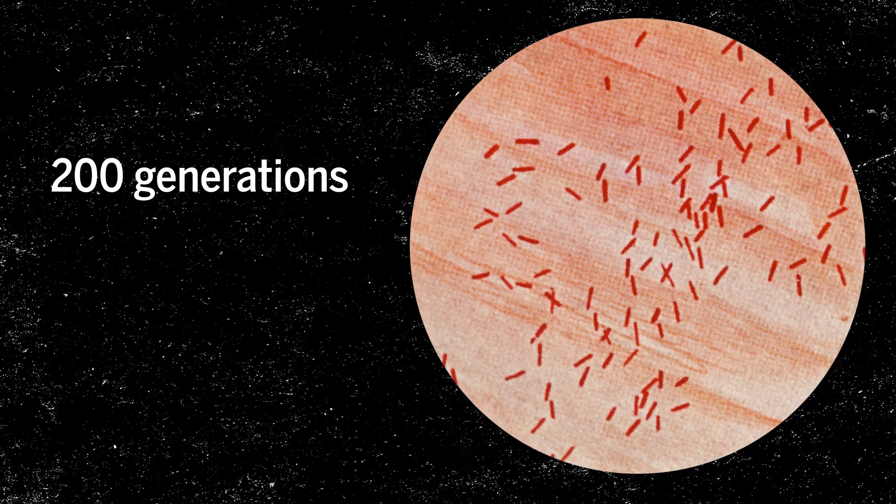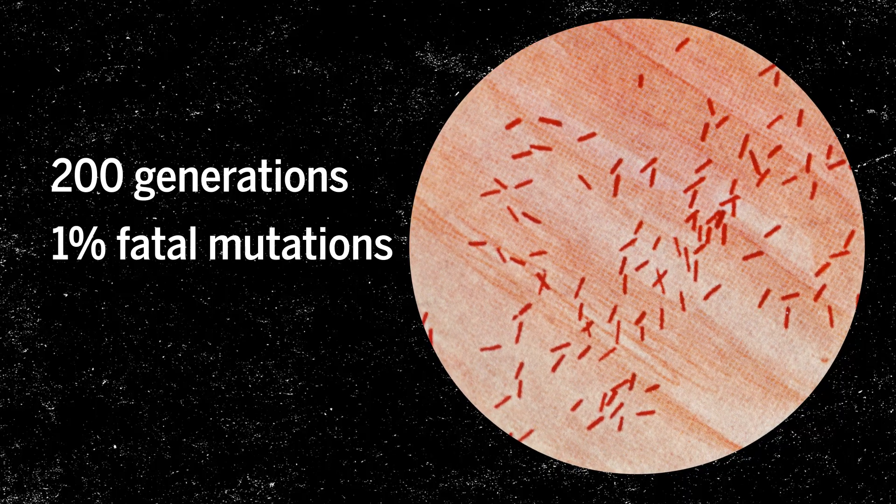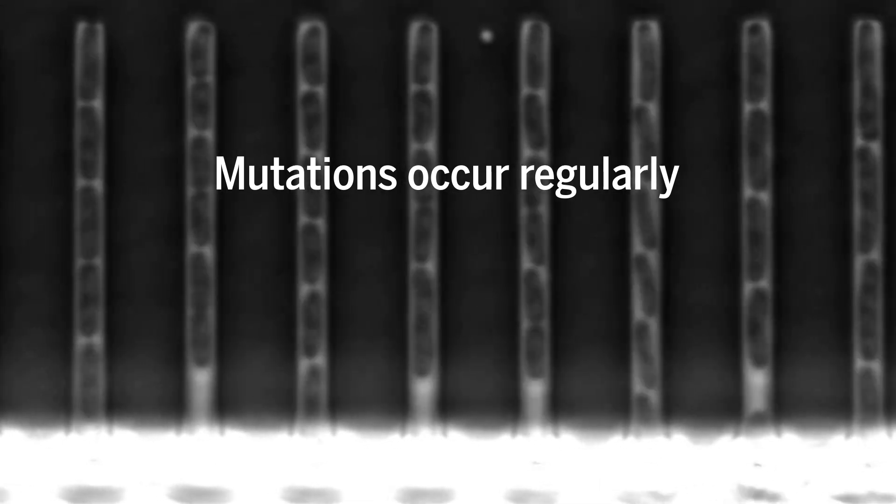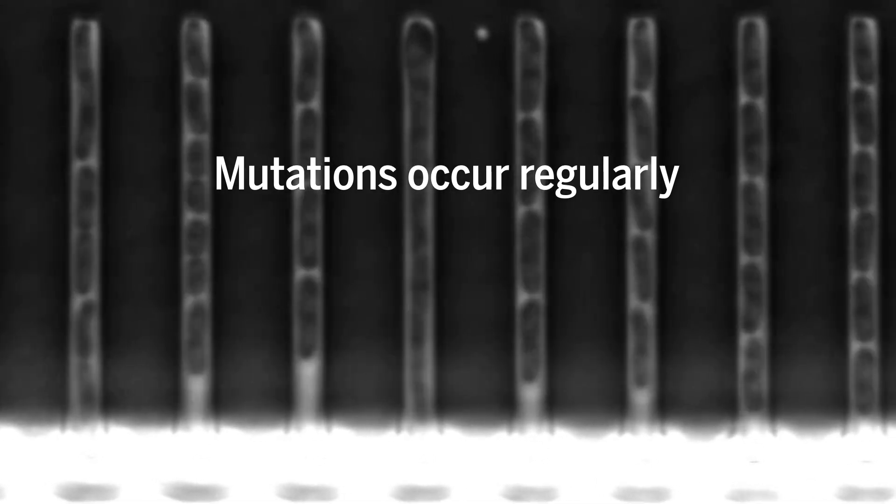They were able to calculate the rate of deadly mutations at about 1%, much lower than expected. They also found that mutations occur regularly in individual cells.